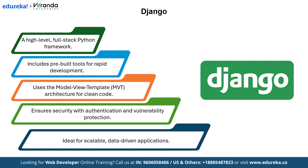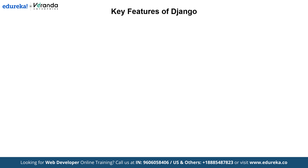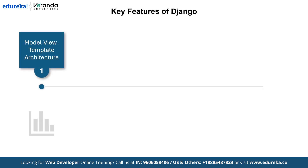Now that we have talked about why Django is such a powerful framework, let's explore some of its key features in detail. First is the Model-View-Template architecture. Django uses the MVT pattern to keep your code clean and organized. It separates your app into three parts: Models for data, Views for logic, and Templates for user interface.